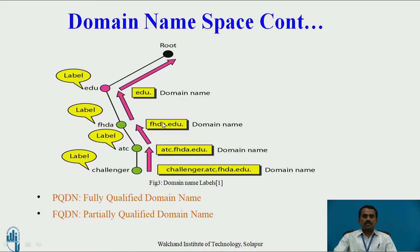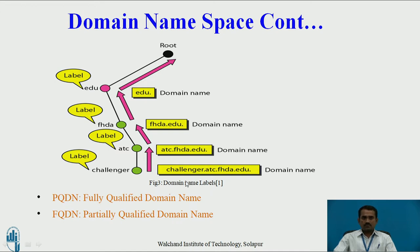For example, this is a good example for domain namespace. This is a root and this is a leaf level. It should start from the leaf level to the root. The labels are: challenger, atc, fsda, edu — these are the labels and we can also call them domain names. The full path name is challenger.atc.fsda.edu. This is a full path name; we have to read from leaf to the root. Based on this, they have given two DNS parts: PQDN and FQDN, which ends with the root.